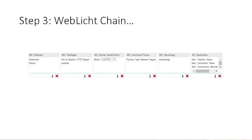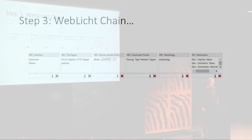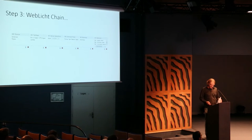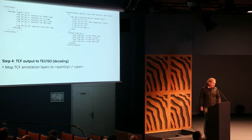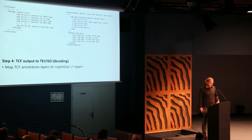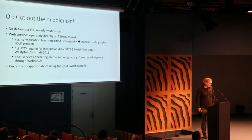Then comes a WebLicht chain where you can do basically anything that WebLicht allows — tokenize, recognize named entities, do constituent parsing, and so on. This results in a TCF file that can then, in the last step, be decoded again into TEI ISO, meaning most importantly that the TCF annotation layers, like the part of speech tags, will be mapped to spans and span groups as prescribed by the standard.